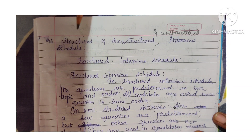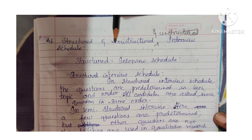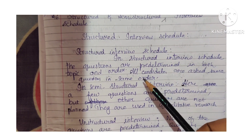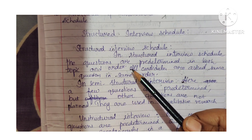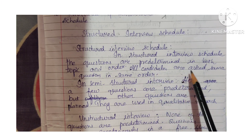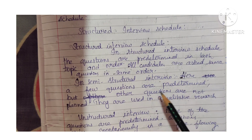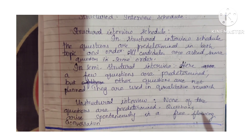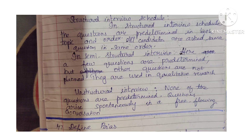Question 46: Structured and semi-structured interview schedule. In a structured interview schedule, the questions are predetermined in both topic and order, and all candidates are asked the same questions in the same order. In a semi-structured interview, a few questions are predetermined but other questions are not planned; they are used in qualitative research. In an unstructured interview, none of the questions are predetermined — questions arise spontaneously in free-flowing conversation.